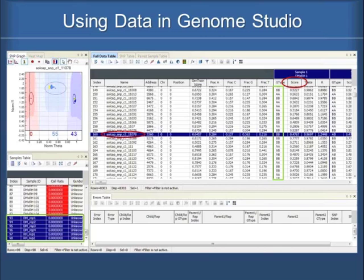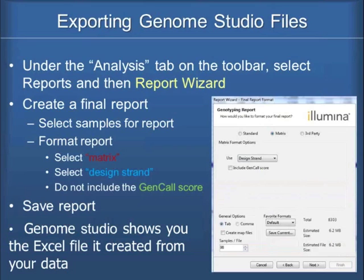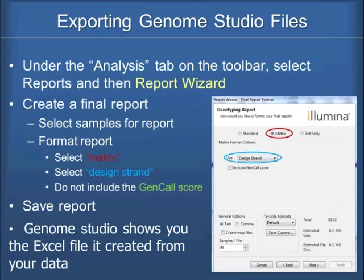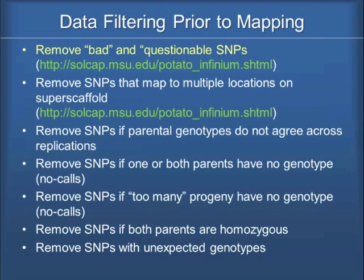You want to be able to manipulate and move around in this program, because you're going to come back and want to look at this information after you've collected some of your segregation data. What we're going to do now is export this data into something so we can move it into a mapping program. They have a tool called Report Wizard. You go into that and just select matrix. You select the design strand to use as your reference call, and remove the gen call score — it's creating a text file that we can then import into Excel.